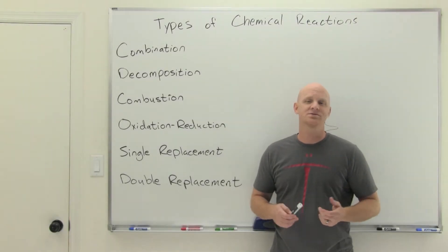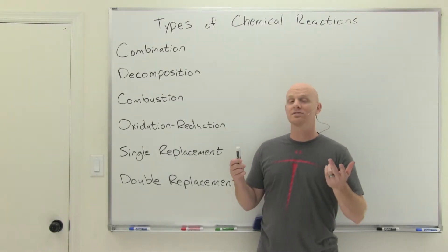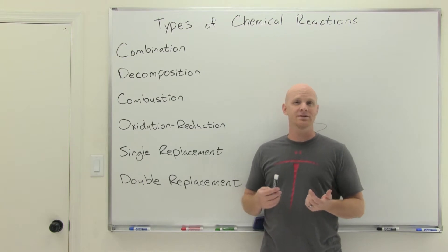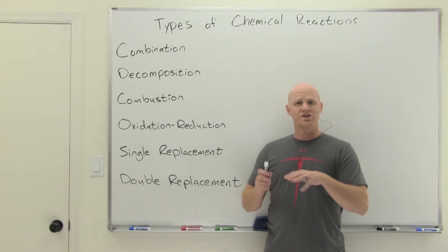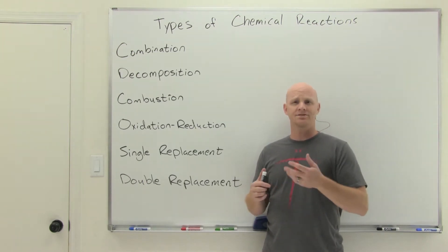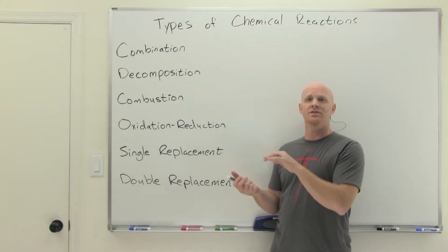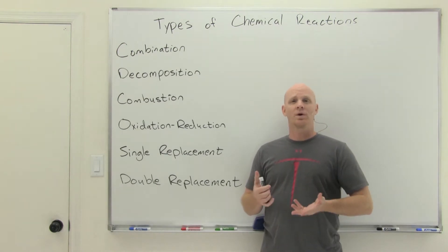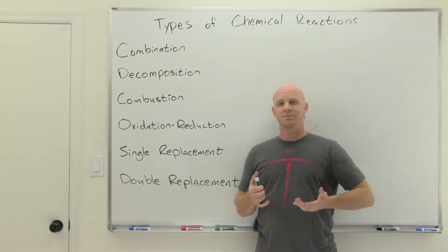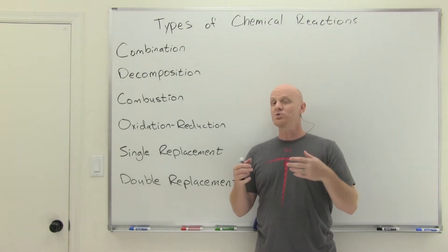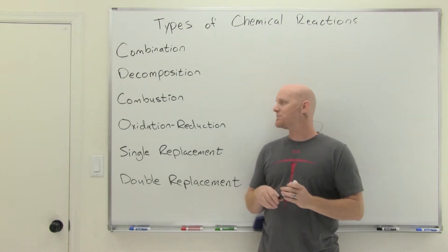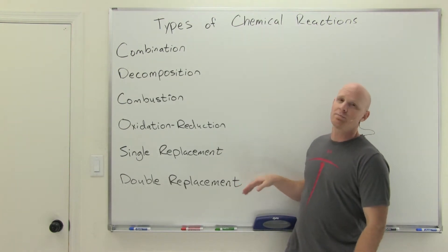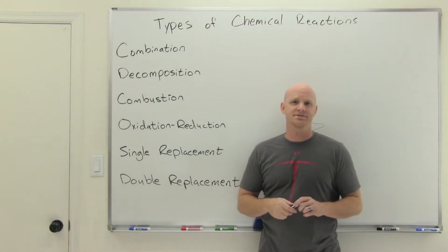Common types of chemical reactions — that's what we'll be talking about in this lesson from my high school chemistry playlist. We're in a whole chapter on chemical reactions. We just finished a lesson on balancing chemical reactions, and after this lesson we're going to focus a little more on two of the major types: oxidation-reduction reactions and double replacement reactions.